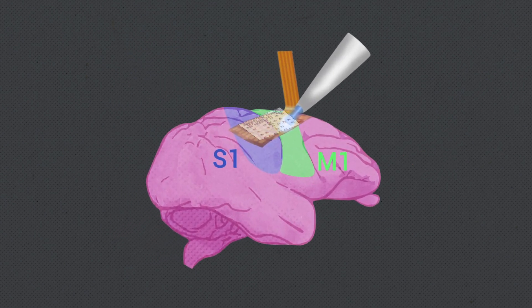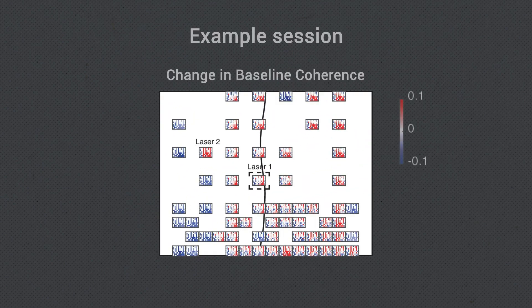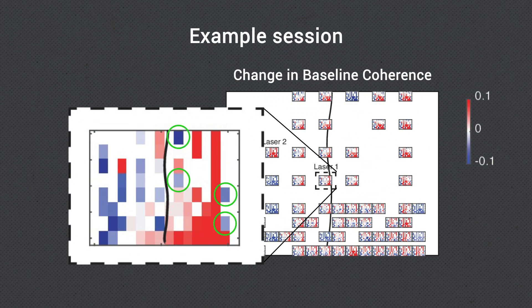But at the scale of individual electrode recordings, the effects were more variable, with some connections becoming weaker rather than stronger.